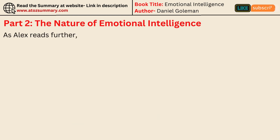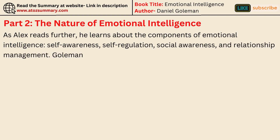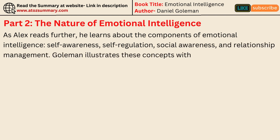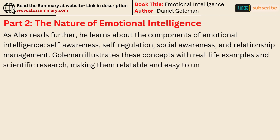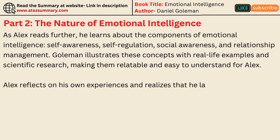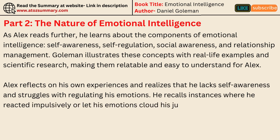As Alex reads further, he learns about the components of emotional intelligence: self-awareness, self-regulation, social awareness, and relationship management. Goleman illustrates these concepts with real-life examples and scientific research, making them relatable and easy to understand. Alex reflects on his own experiences and realizes that he lacks self-awareness and struggles with regulating his emotions. He recalls instances where he reacted impulsively or let his emotions cloud his judgment, leading to negative outcomes.